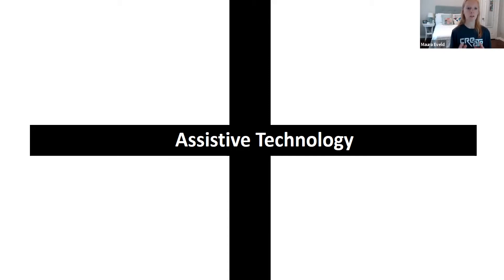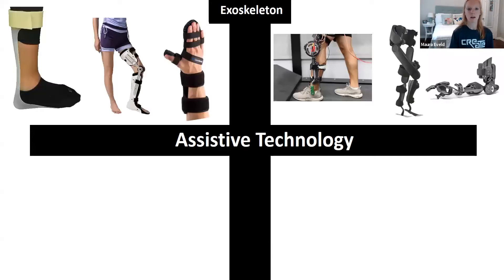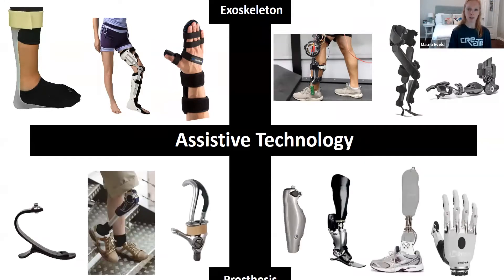For this definition, we have two main categories. The first is an exoskeleton — a device that fits around an affected limb and aids in stability or movement. The second is a prosthesis. This device actually replaces the missing limb and provides some, if not all, of the function that was lost.